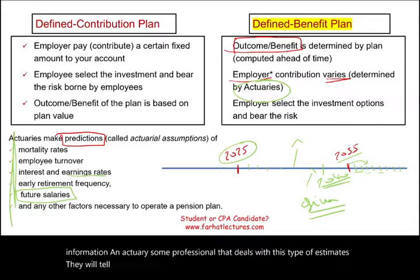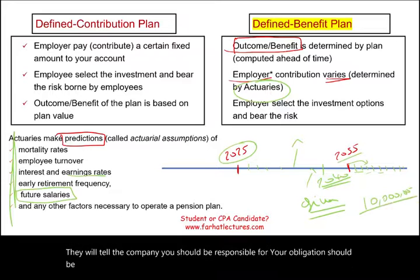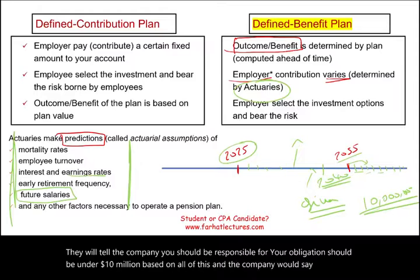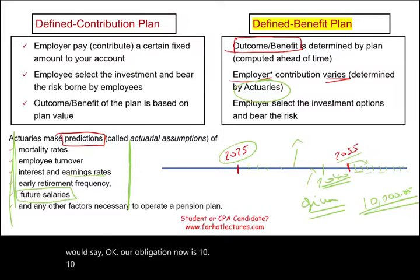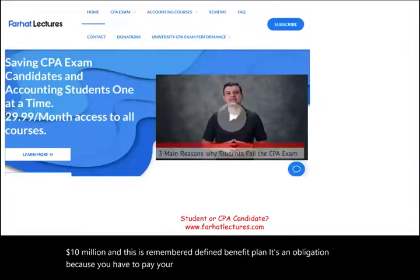The actuary will tell the company: your obligation should be $10 million based on all of these factors. And the company would say, okay, our obligation now is $10 million. Remember, this is the defined benefit plan — it's an obligation because you have to pay your employees into the future.